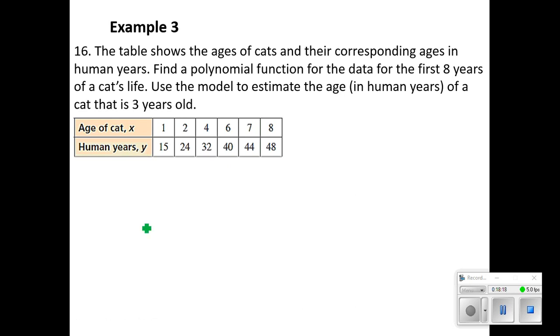We're at our final example today. The table shows the ages of cats and their corresponding ages in human years. Find a polynomial function for the data for the first eight years of a cat's life. Use the model to estimate the age in human years of a cat that is three years old. Unfortunately, we do not have equally spaced X values. So we cannot use the finite difference process to determine what degree. We're missing a couple of data points here that would have really helped us out. So this is going to be purely calculator-based.